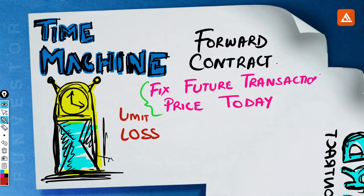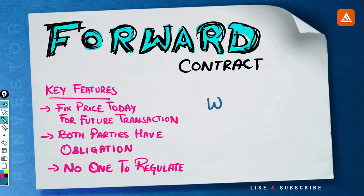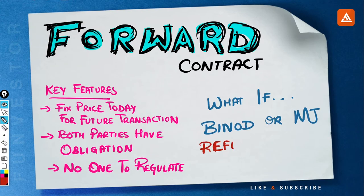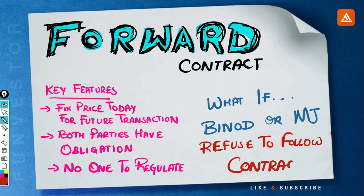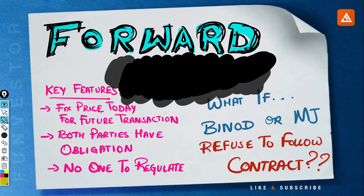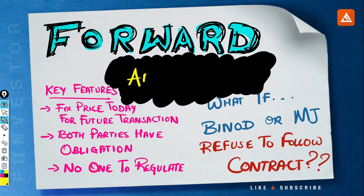How does this solve the problem? By fixing the price they hedge, or limit, the risk of excessive loss. Although this reduces the risk, but what if Binod fails to keep his side of the deal or MJ Limited refuses to buy? Now that's another problem which will be solved in the next video.